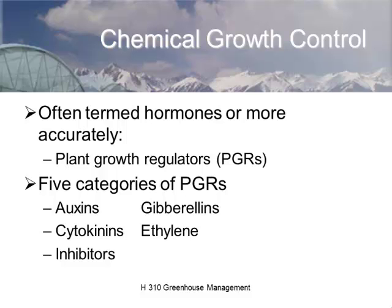The classic hormone definition was not developed in plant science — it was developed in mammalian science, referring to organs that produce a hormone. Another key point is that its activity is manifested by a small quantity with a major response. In plants, many hormones or, more appropriately, plant growth regulators, are manufactured in one part of the plant and migrated to another, but often produced and active in the same cell.